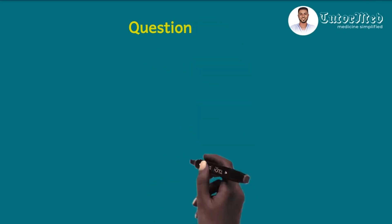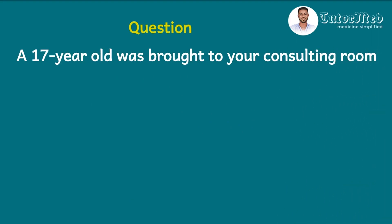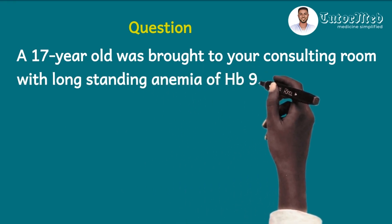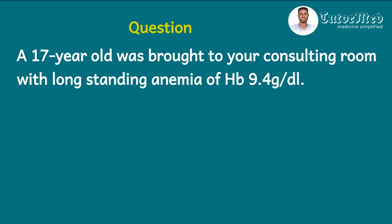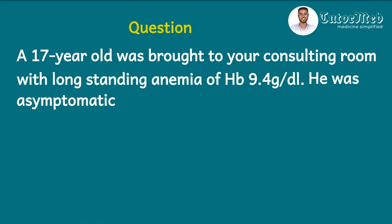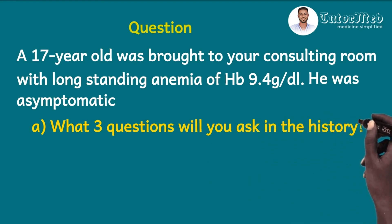Let's look at our clinical case. Kindly note that these cases are sample questions from the Ghana Medical and Dental Council. We have a 17-year-old who was brought to your consulting room with a long-standing anemia of Hb 9.4 grams per deciliter. He was asymptomatic. There are four questions for this clinical case. The first is: what three questions will you ask in the history?